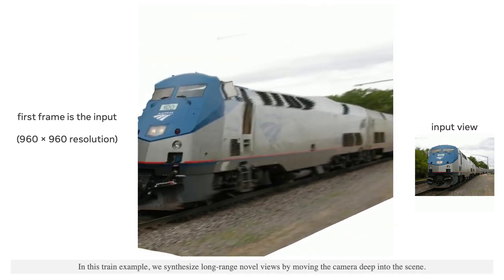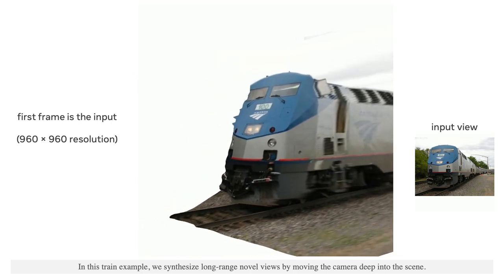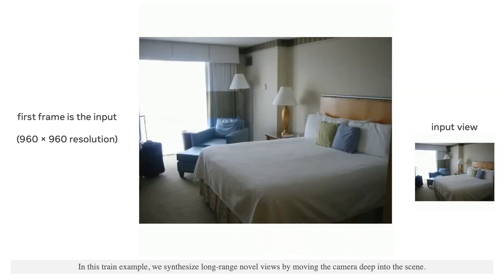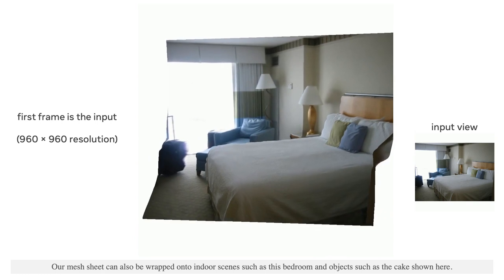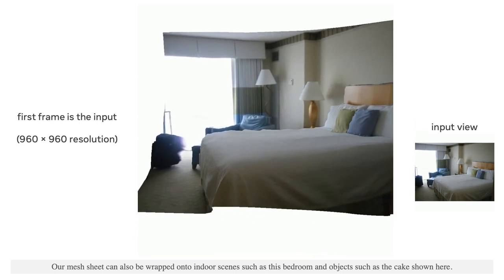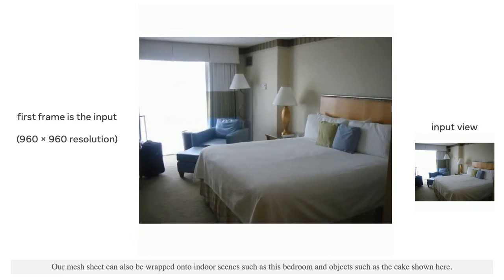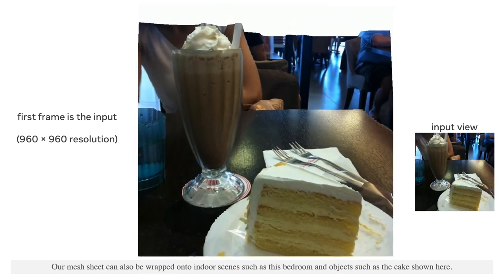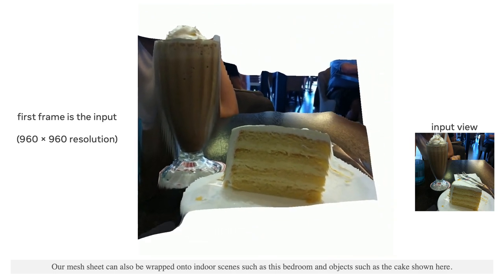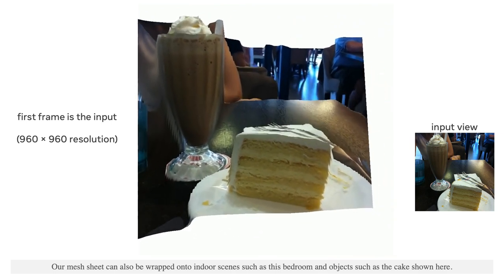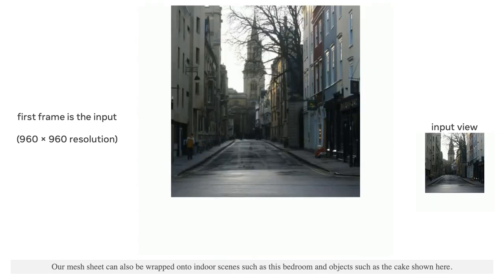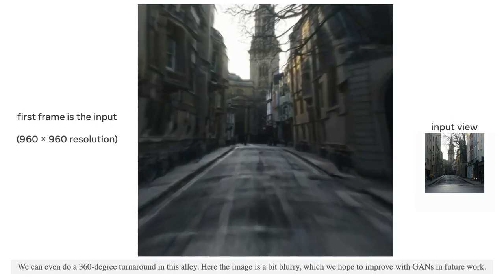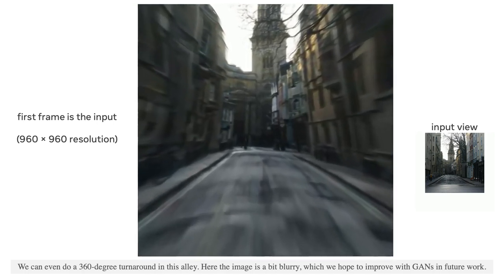In this example, we synthesize long-range novel views by moving the camera deeply into the scene. Our mesh sheet can also be wrapped onto indoor scenes such as this bedroom, and objects such as the cake shown here. We can even do a 330-degree turnaround in this alley.